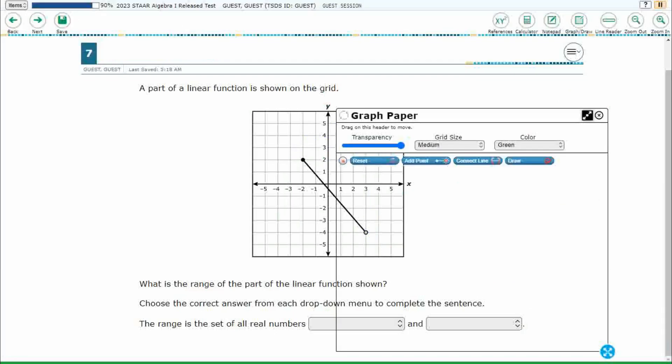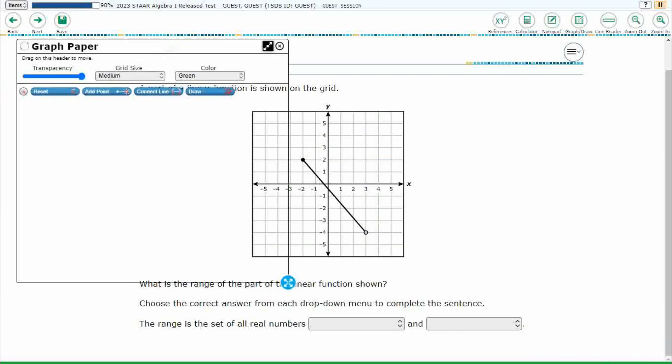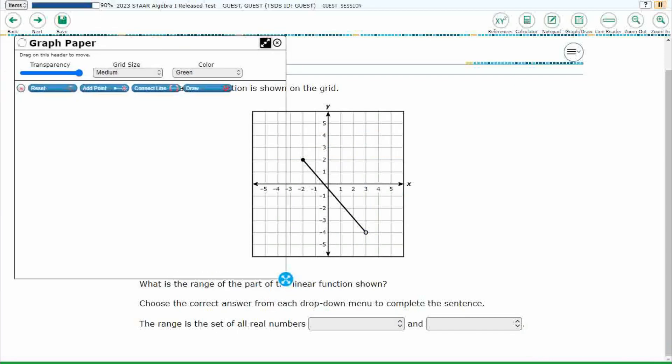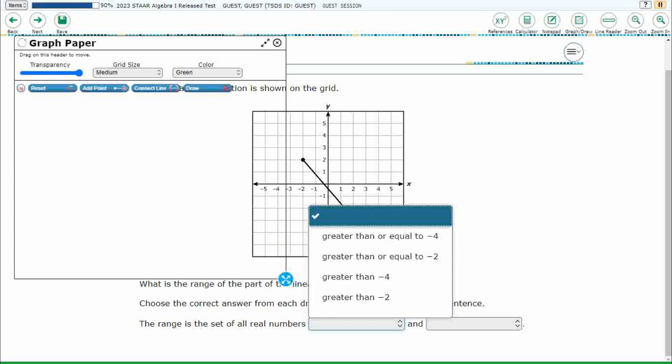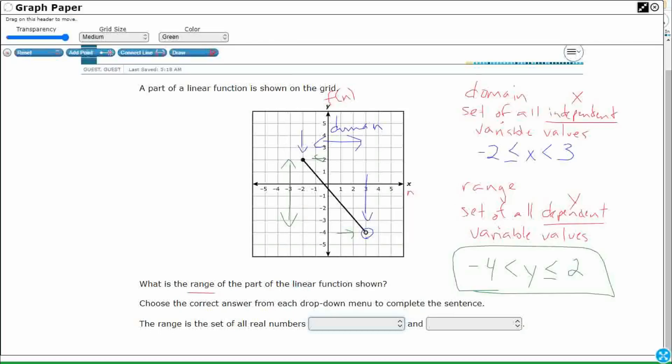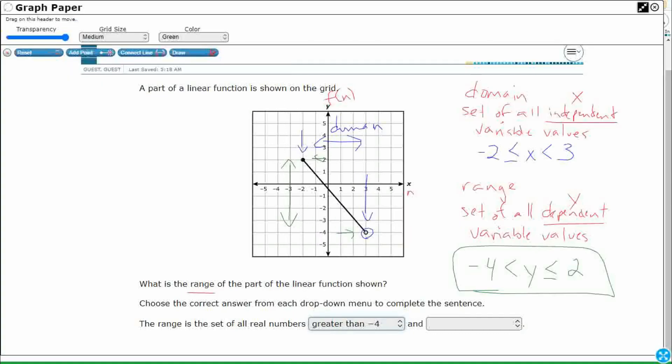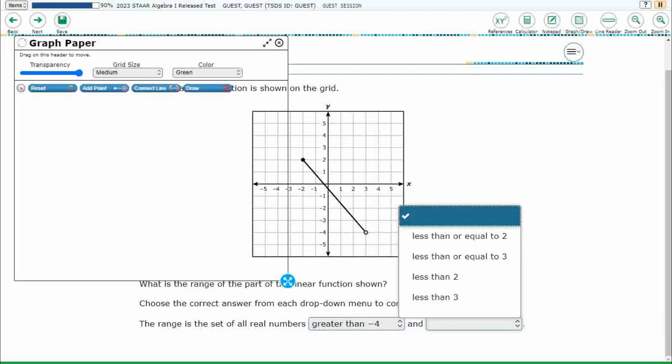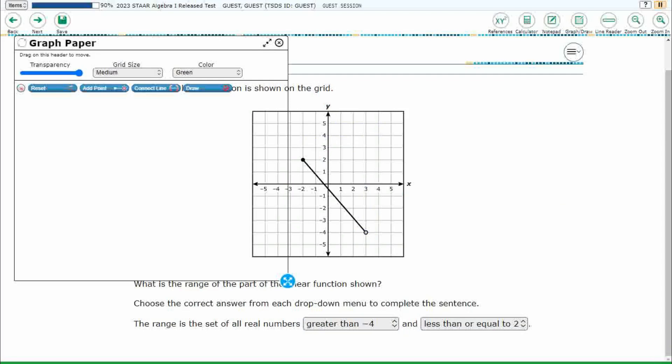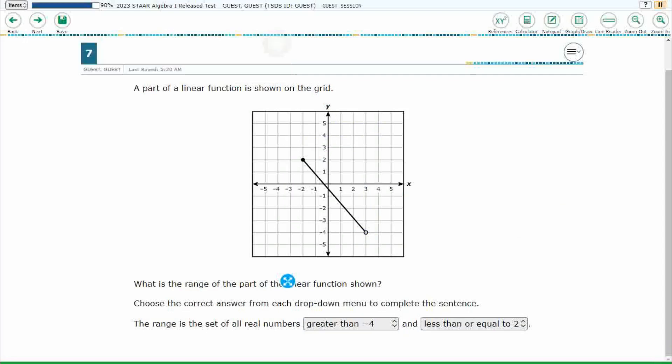But we're going to see here that it's going to be in words. So remember we said the range of all real numbers is greater than negative four—that's what that says, greater than negative four, not greater than or equal to. And then it's less than or equal to two, because that's the closed circle. And that is our answer for how we can show the range of this partial function.